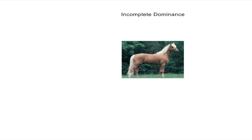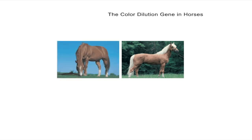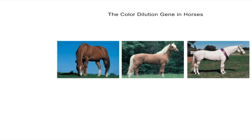One example of incomplete dominance occurs in the color dilution gene in horses. The horse color phenotypes chestnut, palomino, and cremello are controlled by the color dilution gene.